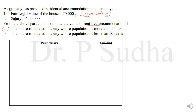Situation A: The house is situated in a city whose population is more than 25 lakhs. If population is more than 25 lakhs, we apply 15%. Salary given is 6 lakhs. So value of rent-free accommodation is 6 lakhs into 15%, which gives us 90,000 rupees. This is the value of rent-free accommodation for situation A.